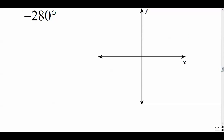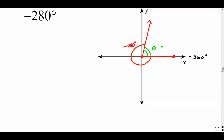For negative 280 degrees: in standard position we go clockwise — negative 90, negative 180, negative 270 — and negative 280 is just past that. The reference angle is the difference between negative 280 and negative 360. Subtracting gives 80 degrees, and the reference angle is always expressed as positive — so 80 degrees.